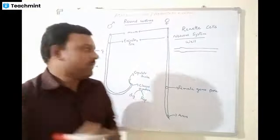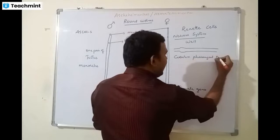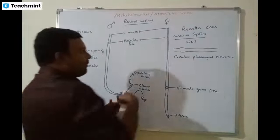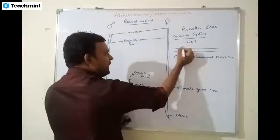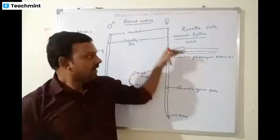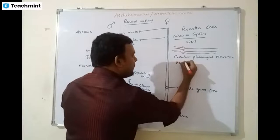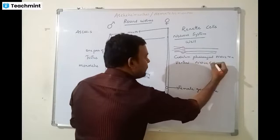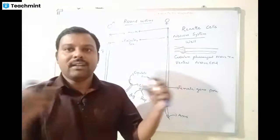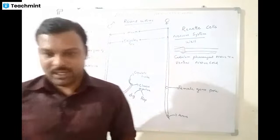The circumpharyngeal nerve ring has anterior and posterior projections going to the ventral side. The nerve cord is on the ventral side — you will see this pattern in Annelida, Arthropoda, and Mollusca as well, whereas in Chordata the nerve cord is on the dorsal side. We have started seeing the complete digestive system and the well-developed nervous system with a ventral nerve cord among invertebrates, starting in Nematihelminthes.